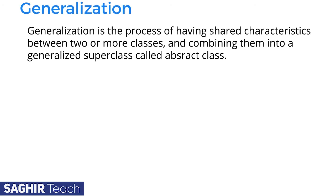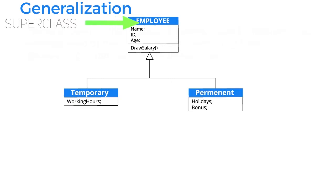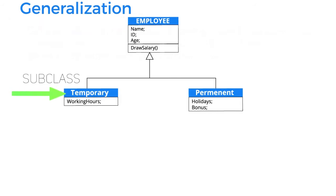Generalization is the concept based on superclass and subclass properties. The properties contained in the superclass will automatically be inherited by its subclasses. In this example, a university employee — from minor to major — contains the properties name, ID, age, and raw salary. This main superclass is called an abstract class. Employees are divided into two parts: temporary and permanent. Temporary workers contain the properties of working hours, while permanent workers have holidays and a bonus.